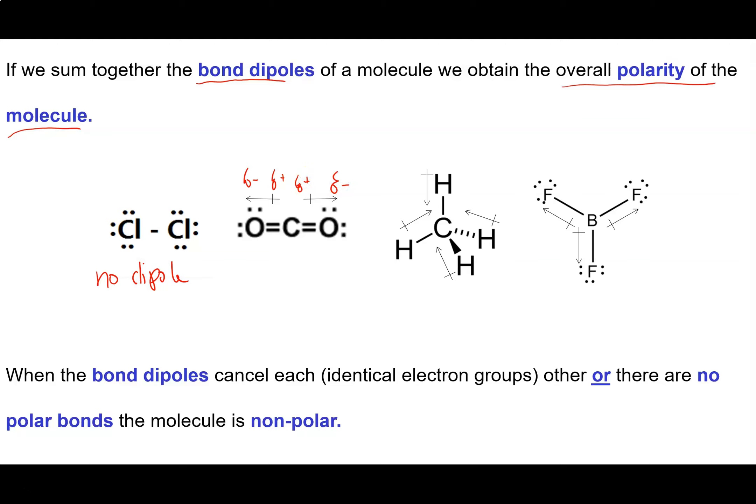And there clearly isn't a positive end of this molecule and a negative end of this molecule. It's kind of like this alternating charge where it goes negative, positive, negative. So the two bond dipoles, they don't add together to give an overall molecular dipole. So again, no dipole.